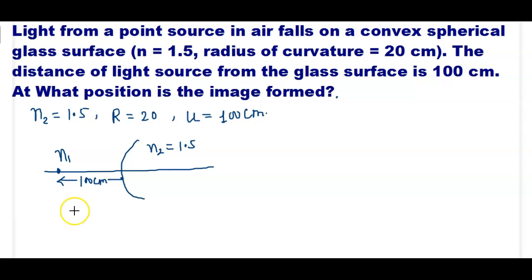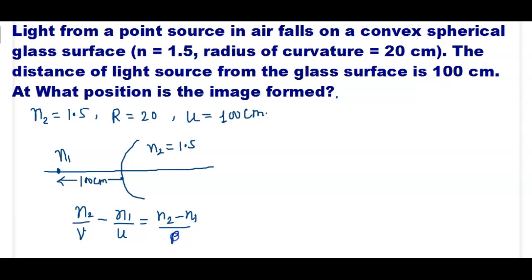We know that refraction from the spherical glass surface is given by: N2/V minus N1/U equals (N2 minus N1)/R. Where N2 is the refractive index of the second medium, V is the distance of the image, N1 is the refractive index of the first medium in which the object is placed, U is the distance of the object from the spherical surface, and R is the radius of curvature of the spherical glass surface.